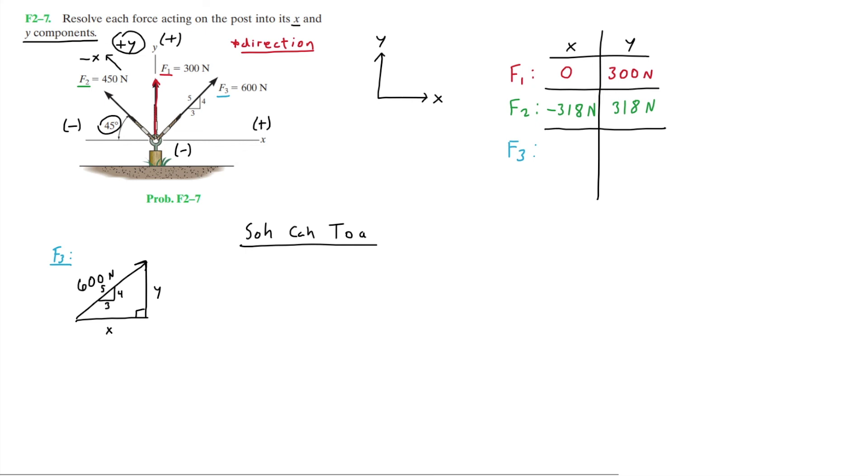Now to find the X, since we don't have an angle, we're not going to use SOHCAHTOA for this one. Instead we're going to use that 3-4-5 relation. So the X component F3X will equal 600, which is the hypotenuse. Since the 3 is in the X direction, that is going to be times 3 over 5. These are all essentially proportions. That equals 360. Since the force points in the positive X direction, that's just going to remain positive. Therefore, the X component of F3 is 360 Newtons.